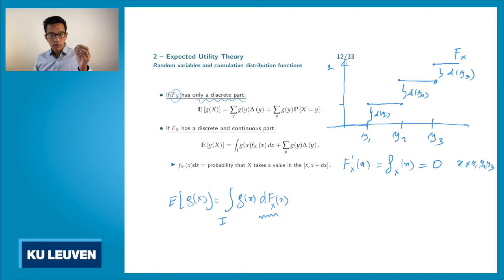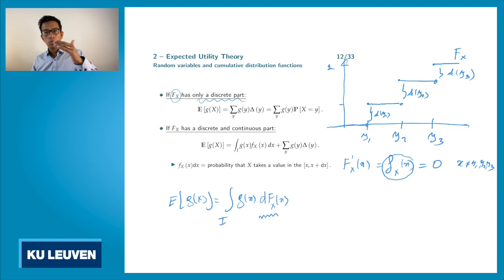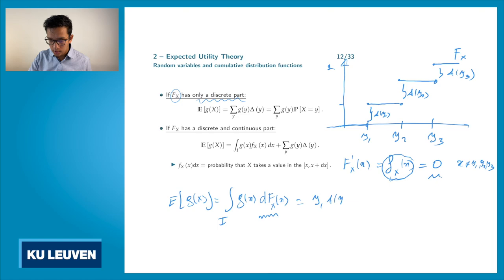This dF_X(x) is either the jump size when there's a jump, or f_X(x) times dx when there's no jump. But all the horizontal parts drop out because they have a density — small f — equal to zero. So what you're left with is g(y1)·delta_y1 plus g(y2)·delta_y2 plus g(y3)·delta_y3.